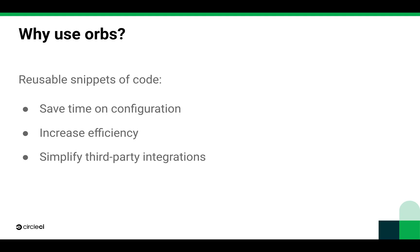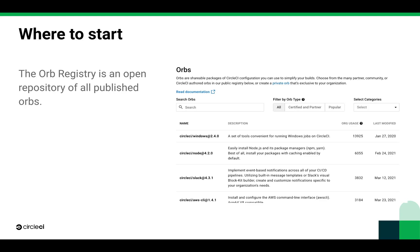To start using orbs, you can search the orb registry on the CircleCI Developer Hub to find the one that will make your life easier, whether it's AWS, Slack, Python, Helm, Terraform, whatever you need to make your configuration file simpler.